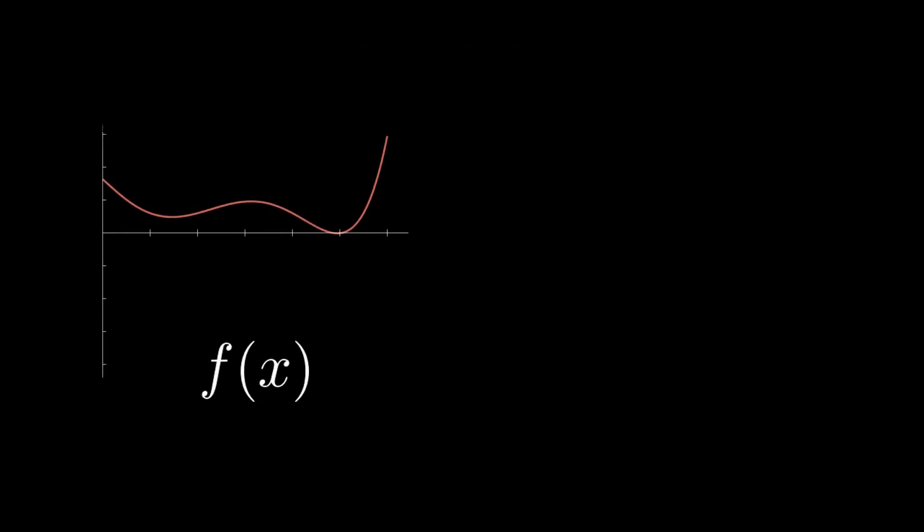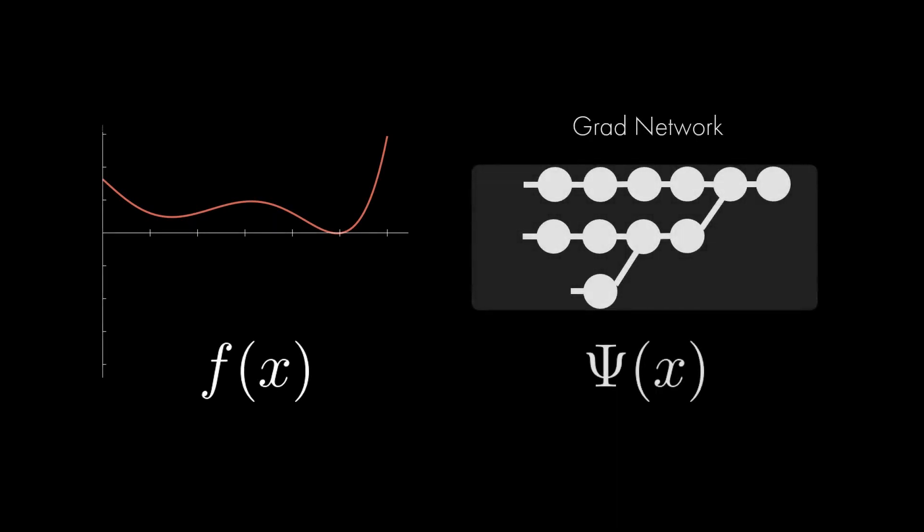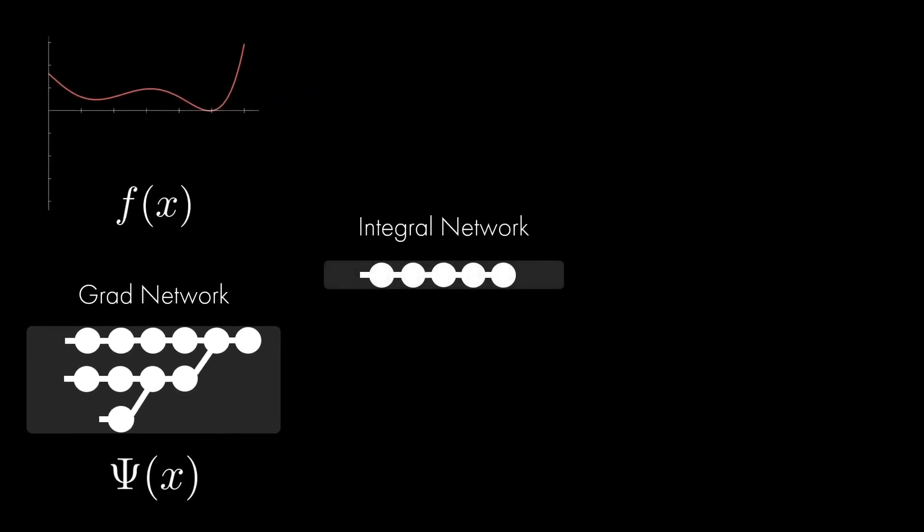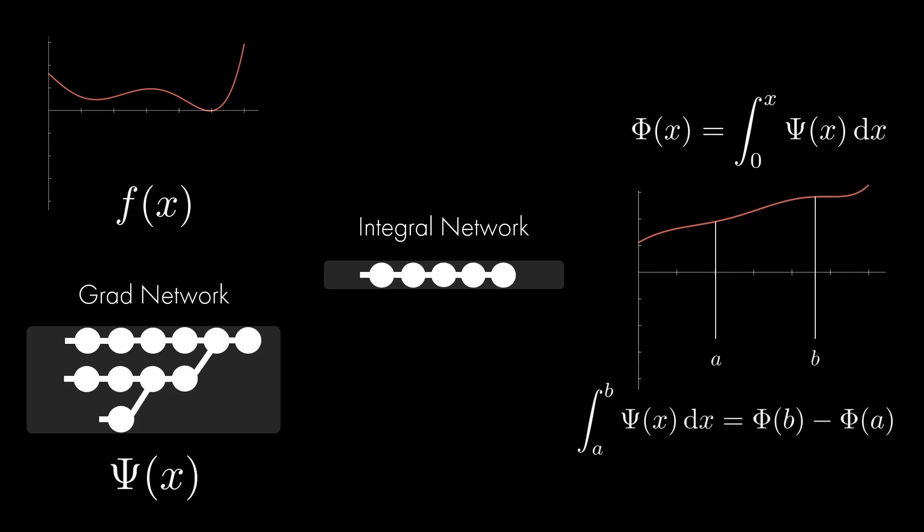As an example, consider that we wish to integrate this one-dimensional signal. We fit the grad network to the signal with direct supervision. Then, we reassemble the integral network, and querying its outputs results in the following 1D signal, which is an integral up to the input coordinate. Thus, evaluating a definite integral corresponds to subtracting the network output at the two bounds of integration.